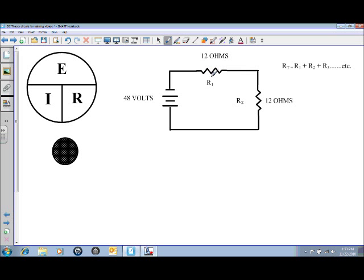And in this circuit we have R1 that's at 12 ohms and R2 that's also at 12 ohms. So we can take those values,